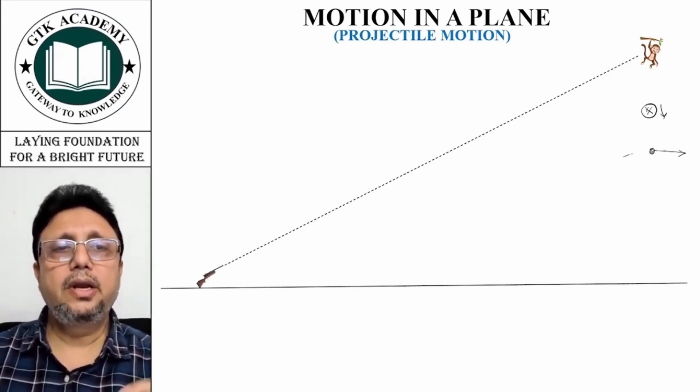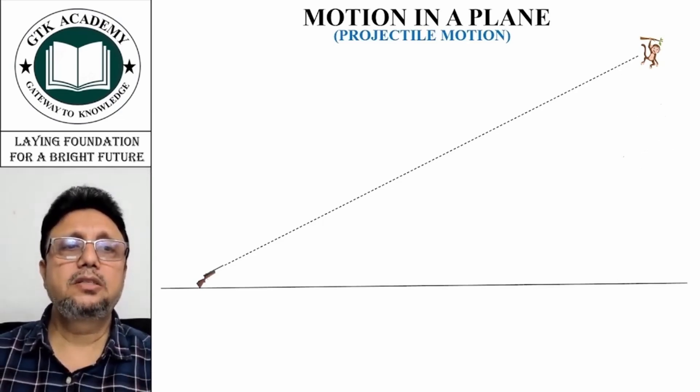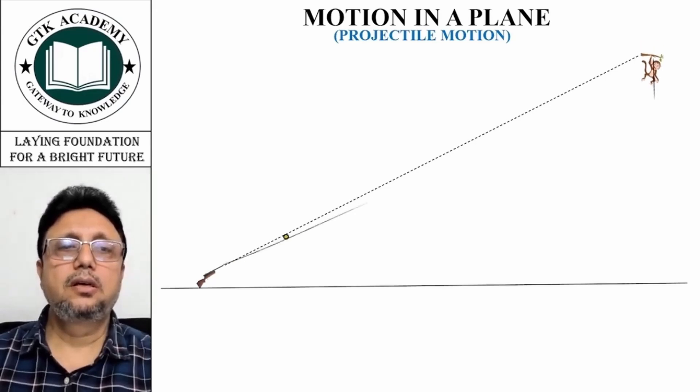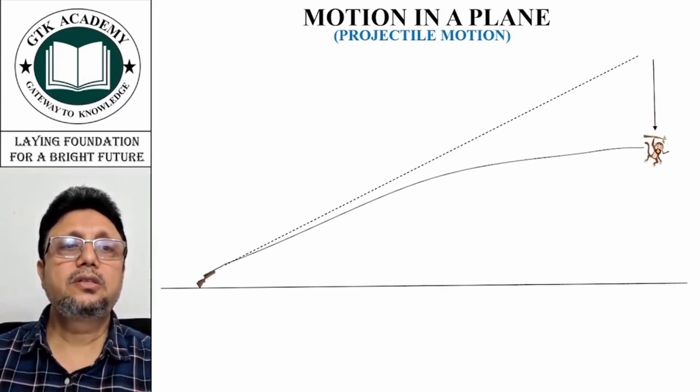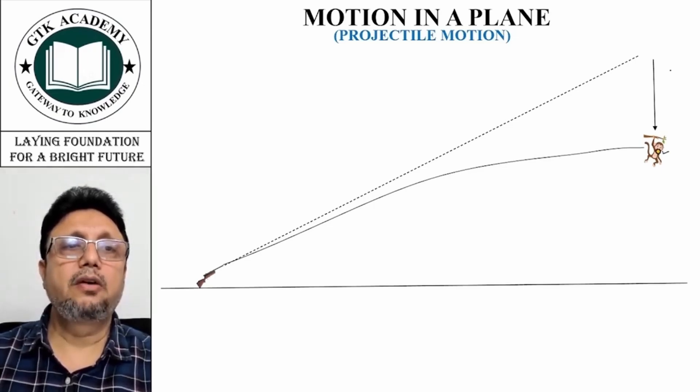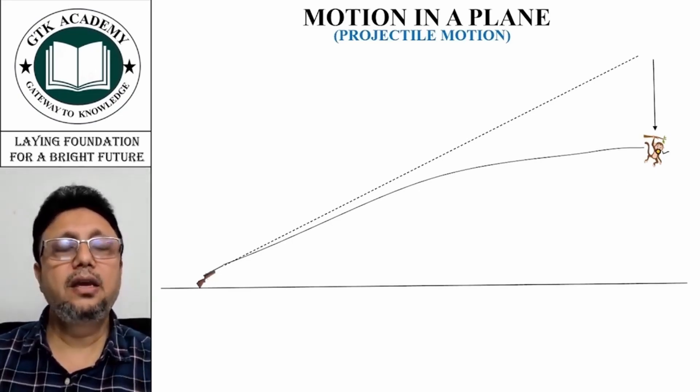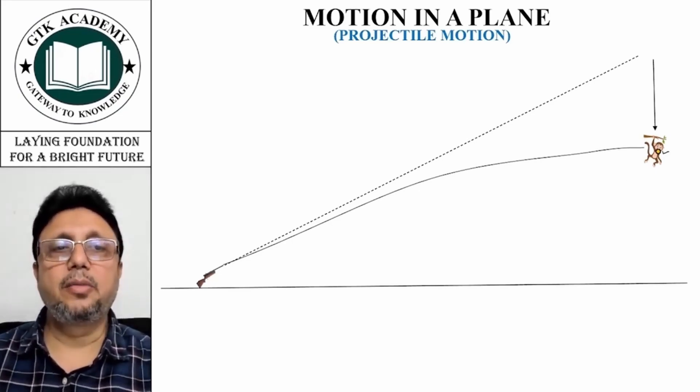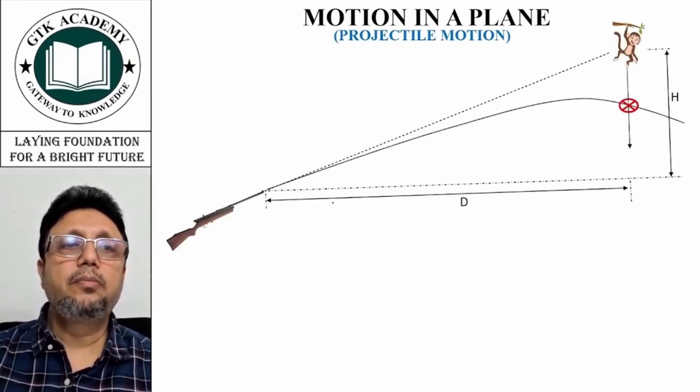For the bullet to hit the monkey, these positions have to be the same. When your bullet reaches this place in the vertical line just below the monkey, if you draw a vertical line, the monkey also has to be at that position. Then only it's going to hit the monkey.